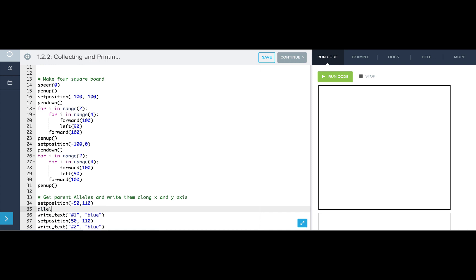I'll use the variable name allele one and then use the term input to get input from the user. I'll write my prompt inside quotes. What is the first parent's alleles?